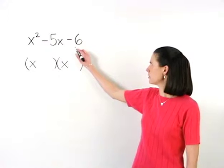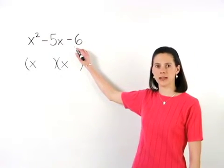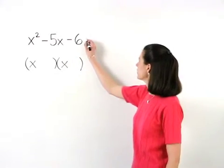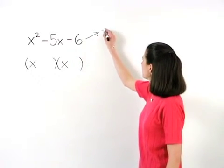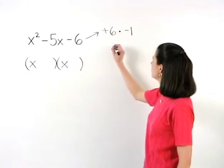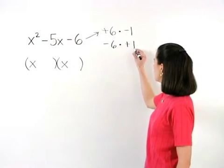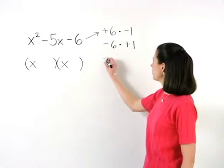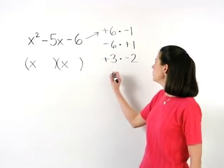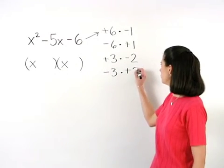Remember that a negative number factors into the product of a positive and a negative. So our factors of negative 6 are positive 6 times negative 1, or negative 6 times positive 1, or positive 3 times negative 2, or negative 3 times positive 2.